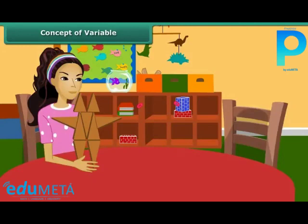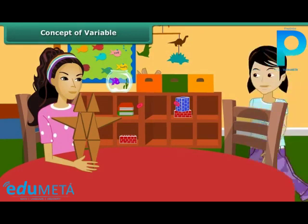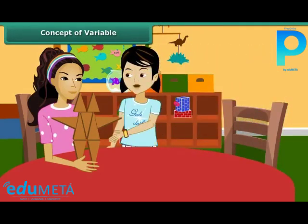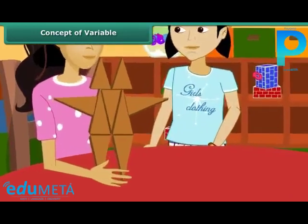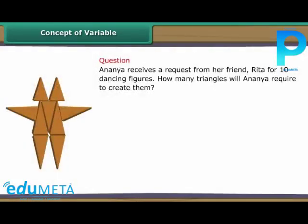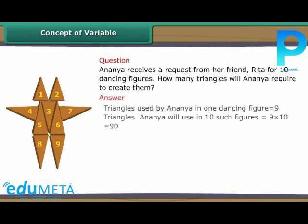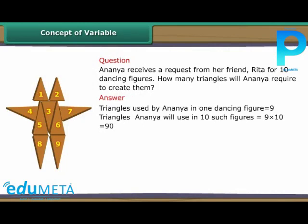Concept of Variable: Ananya creates dancing figures using triangles made of wood. One day she receives a request from her friend Rita for 10 such dancing figures. How many triangles will Ananya require to create them? Ananya uses 9 triangles to create one figure. Therefore, in 10 dancing figures, Ananya will use 9 into 10, which equals 90 triangles.